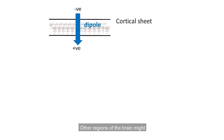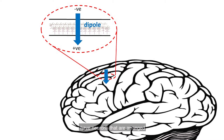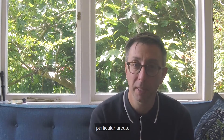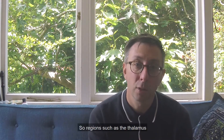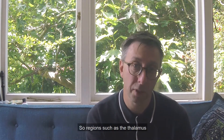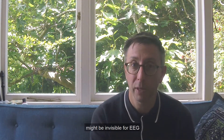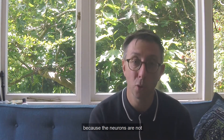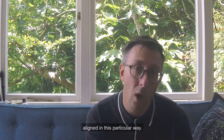This alignment particularly occurs in the cortex, where neurons are arranged in an aligned fashion within the cortical sheet. Other regions of the brain may have neurons not arranged in this sheet-like fashion, making us insensitive to their electrical signals. Regions such as the thalamus might be invisible to EEG because the neurons are not aligned in this way.